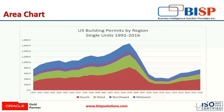The next category is the area chart. It is basically similar to the line chart, but the space between the X axis and the line is filled with a color or pattern. An area chart helps us to analyze both overall and individual trend information.